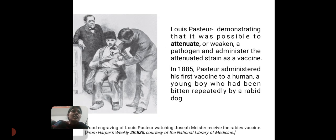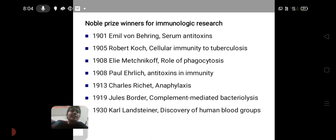No disease followed this inoculation, and the experiment was repeated several times with great success. Next, Louis Pasteur — he demonstrated that it was possible to attenuate or weaken a pathogen and administer the attenuated strain as a vaccine. In 1885, Pasteur administered his first vaccine to a human — a young boy who had been bitten repeatedly by a rabid dog.